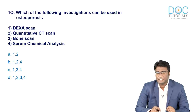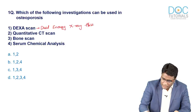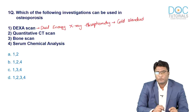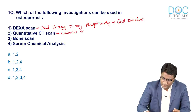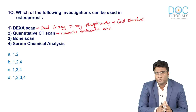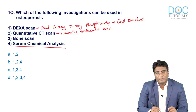The gold standard investigation to look at bone mineral density in patients when evaluating for osteoporosis is the DEXA scan — dual energy X-ray absorptiometry. Quantitative CT is also an additional investigation, especially useful when evaluating the trabecular bone separately from the cortical bone. It is a newer technique also effectively used in the analysis of bone mineral density.